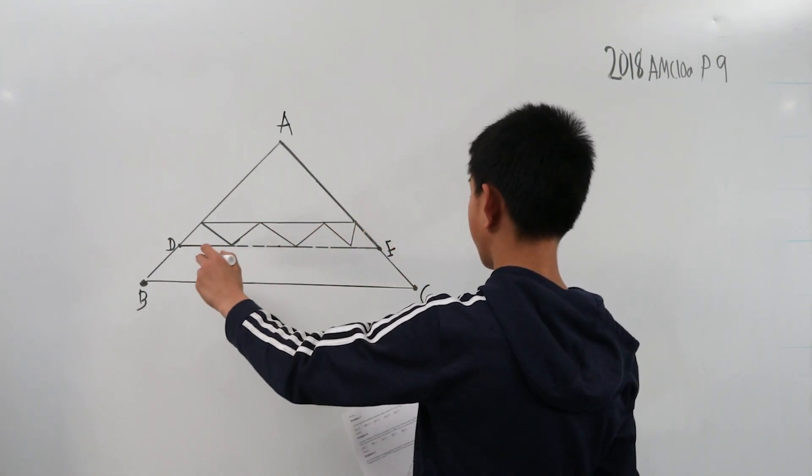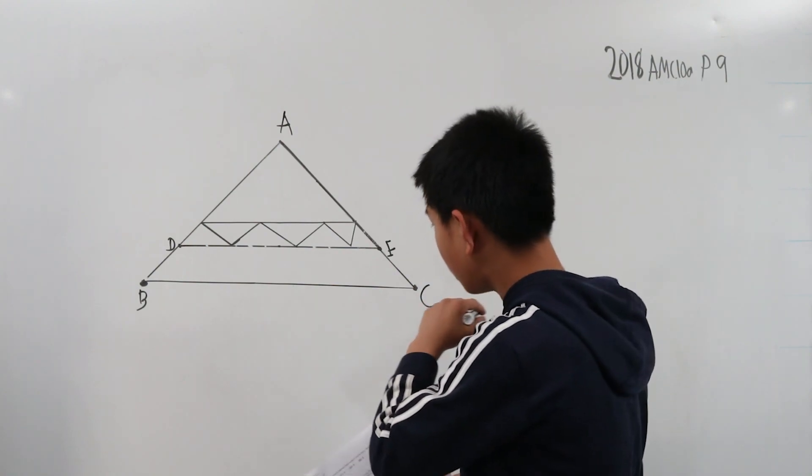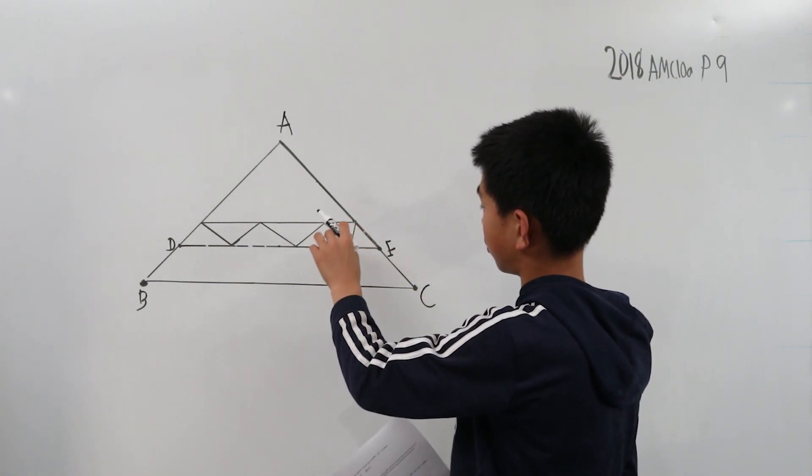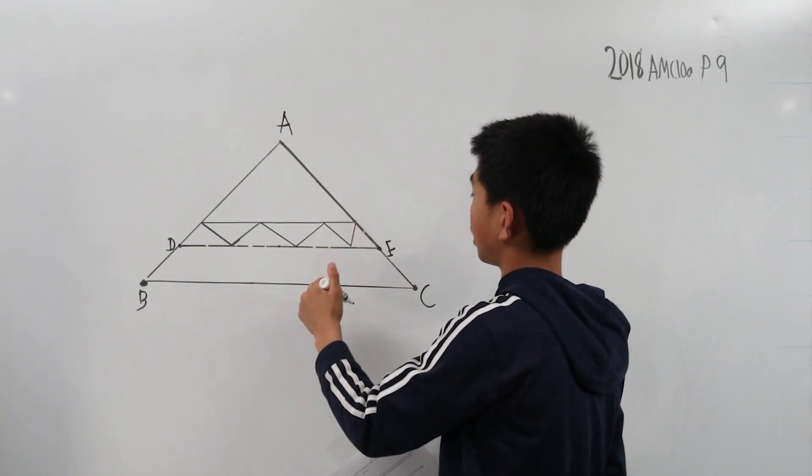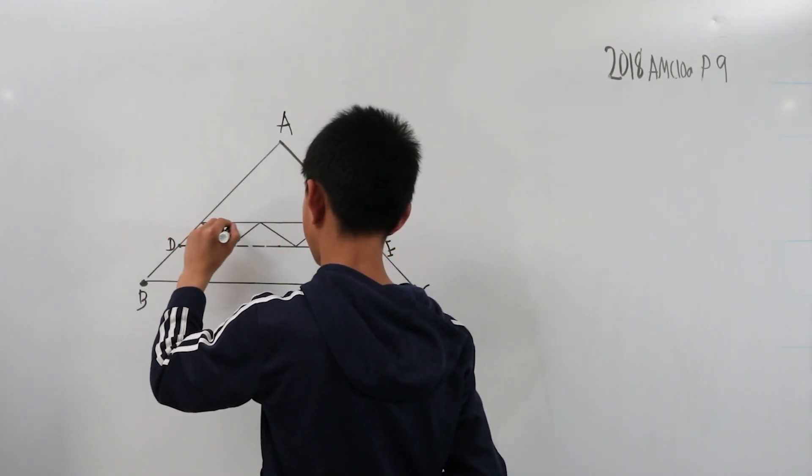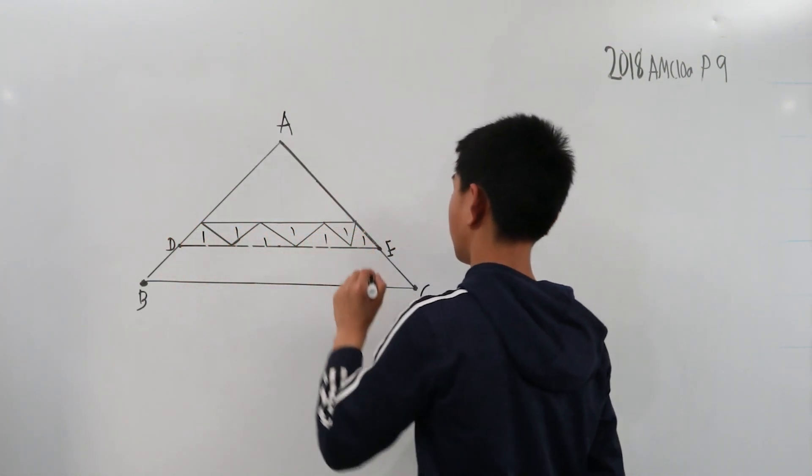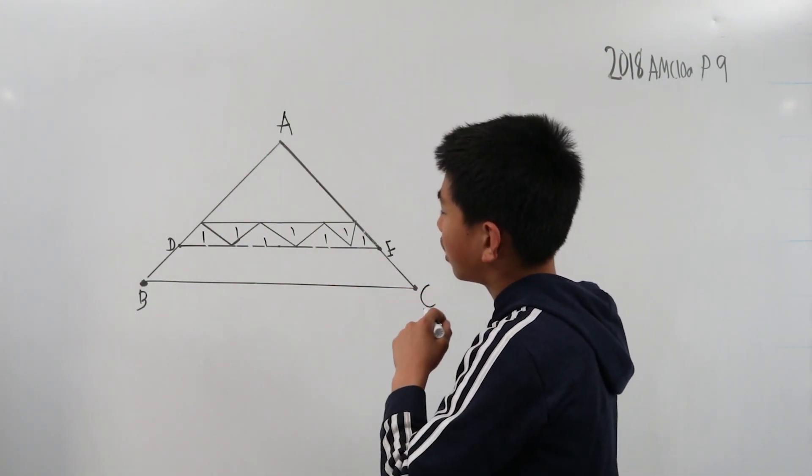So we want to find this shaded area, and here there's supposed to be 2 isosceles triangles, and they're supposed to have area 1, but this is not drawn to scale, but you get the idea.